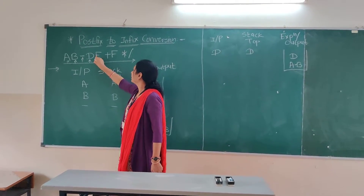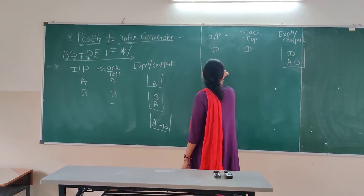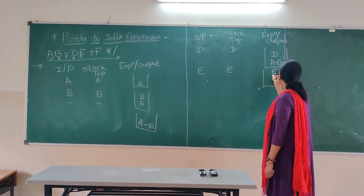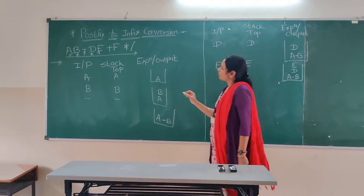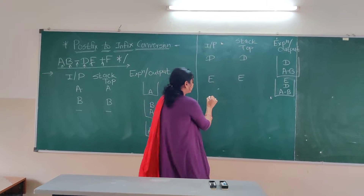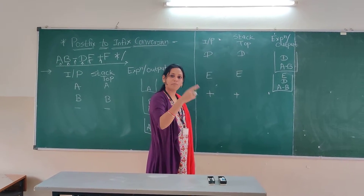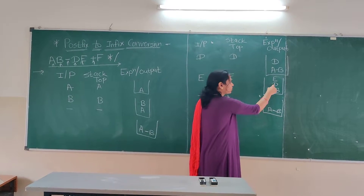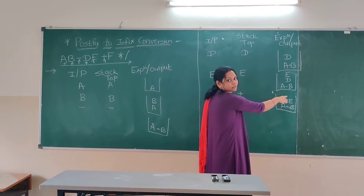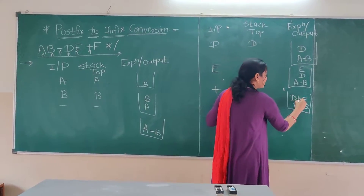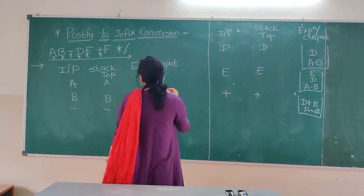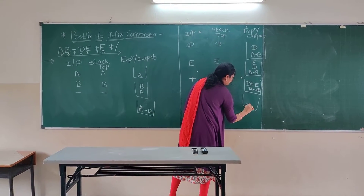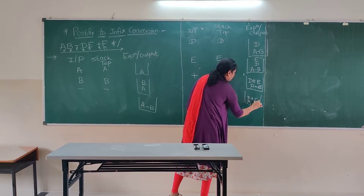Next is again E, which is an operand, so the stack top becomes E and the rest of the stack remains as is. Next is the plus operator. Whenever an operator comes, we pop the operands and place the operator in between. So we pop E and D and place the plus operator between them, giving D plus E. Next is F, which is an operand, so we directly push it onto the stack. Now the stack contains A minus B, D plus E, and F at the top.